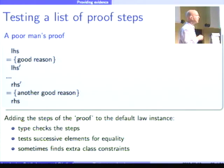So, now in our framework, we built in the possibility to add sub-steps to your laws. So, in the left-hand side, right-hand side, you can put elements in the middle. And then the ClassLaws framework will test successive elements for equality. So, it first typechecks the steps, which is already a good thing for your proofs. But then it also tests successive elements for equality.